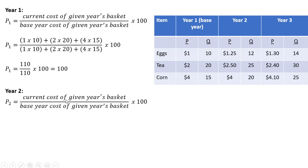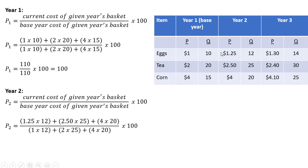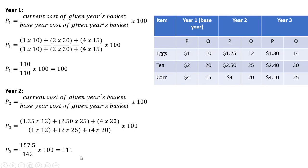For year two, the current cost of year two's basket in the numerator is $1.25×12 + $2.50×25 + $4×20. In the denominator, we use the base year prices applied to year two's quantities: $1×12 + $2×25 + $4×20. So we get 157.5 divided by 142, all multiplied by 100, giving us an index number of 111 in year two.